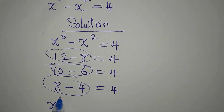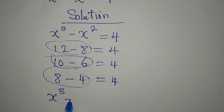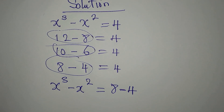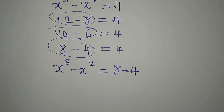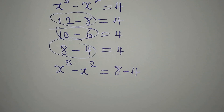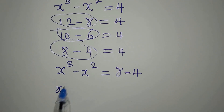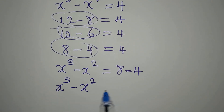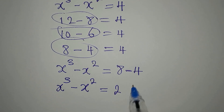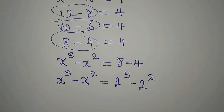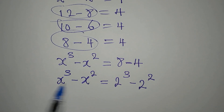So x to the power of 3 minus x to the power of 2 will now equal 8 minus 4. The next thing I will do is express this as: x to the power of 3 minus x to the power of 2 equals 2 to the power of 3 minus 2 to the power of 2.